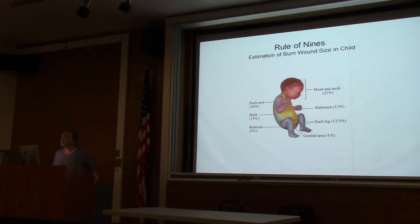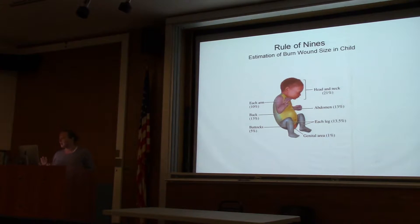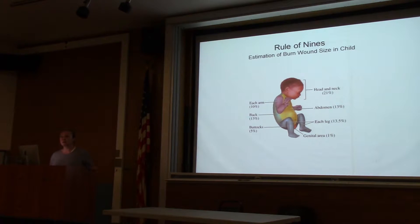The rule of nines for children is a bit different because a child's head is larger in proportion to the rest of the body, so the head takes about 20 percent of the burn surface area.